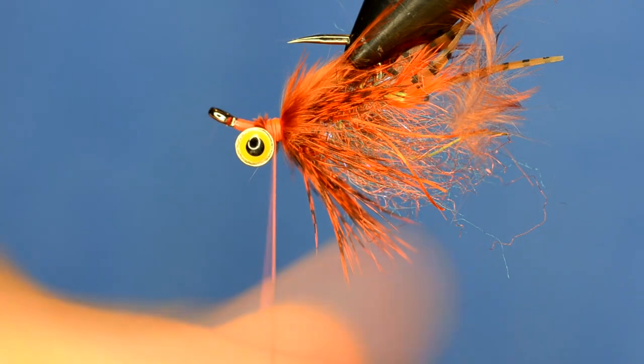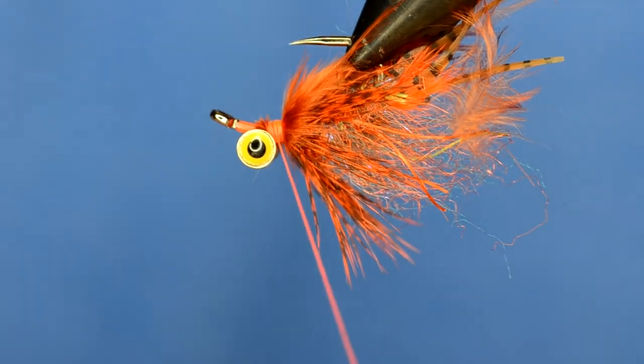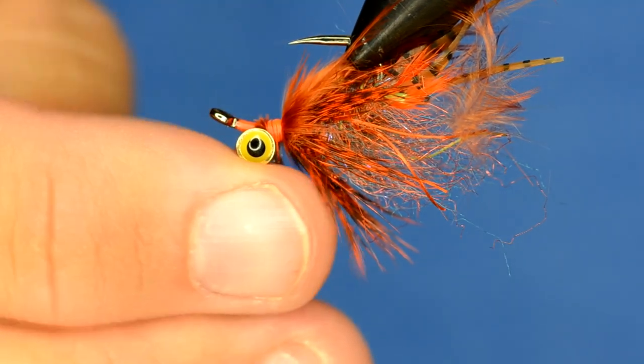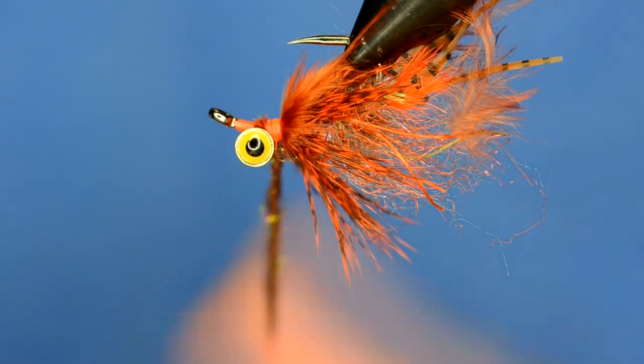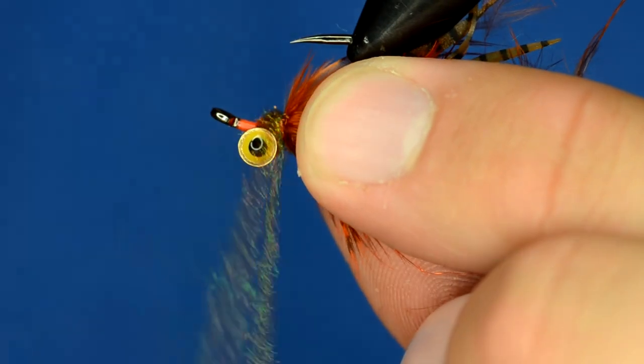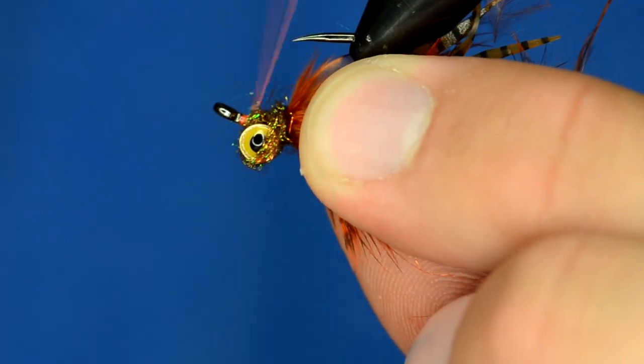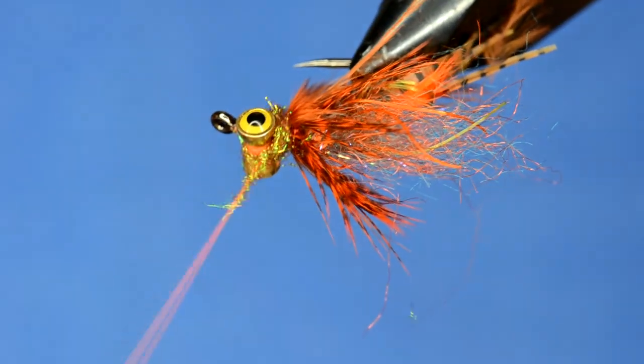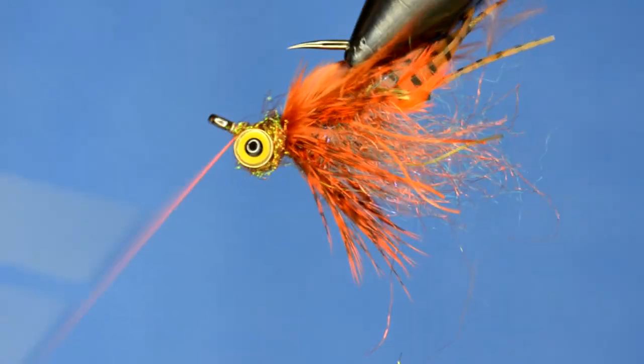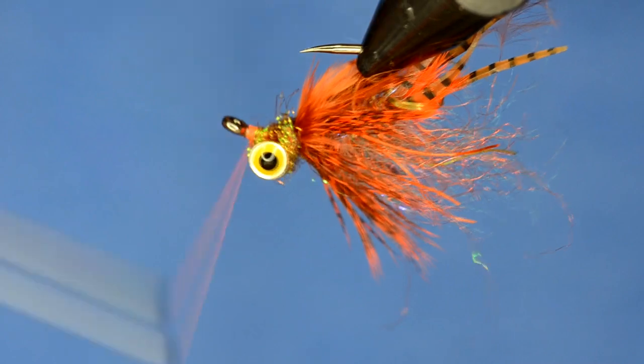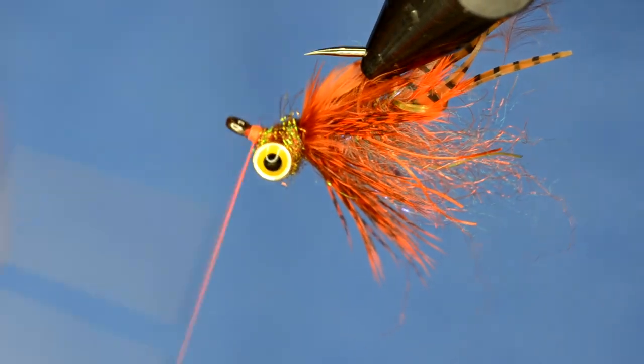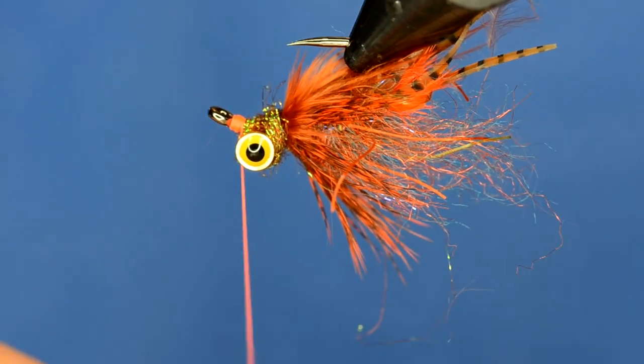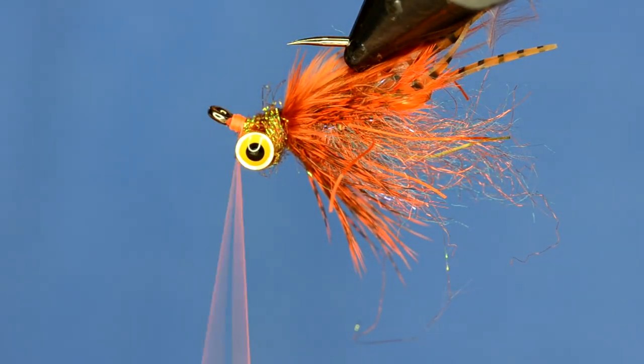Now I'm just going to clean up the head a tiny bit by putting some pheasant tail colored ice dub and just kind of wrap that in between the eyes. And then when you tie it off, make a little bit of a hot spot with your thread. I think that's the whole point of tying with the orange thread.